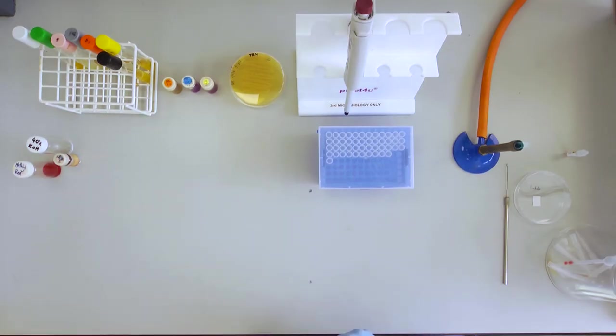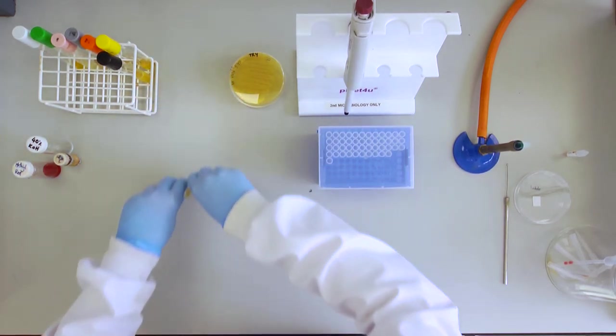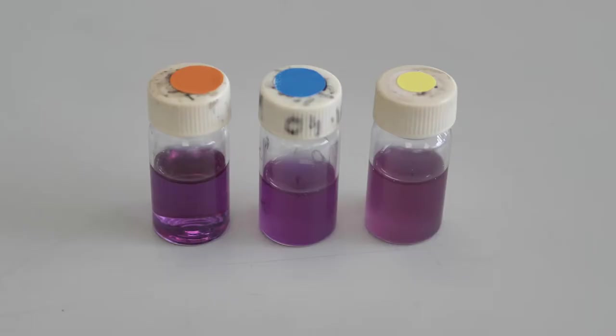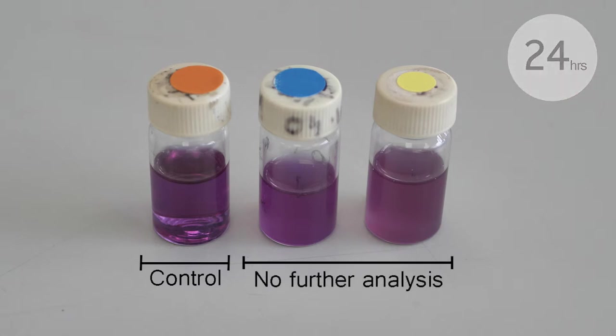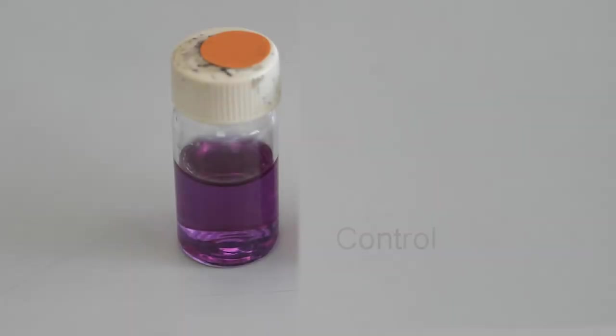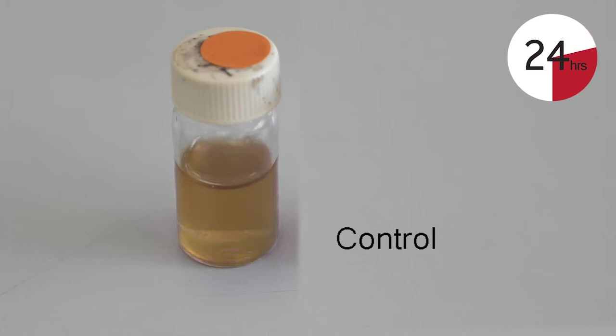The amino acid decarboxylase test checks for the presence of the enzyme decarboxylase in bacteria. If the bacteria has failed to break down glucose then the media in the control will remain purple. No further analysis is required as the decarboxylation process has failed to begin. If the first stage of the decarboxylation process has begun then the bacteria will have broken down the glucose in the media, turning the media from its original purple colour to yellow.